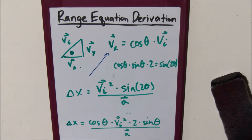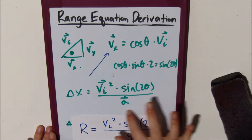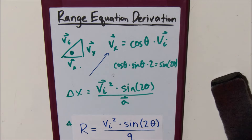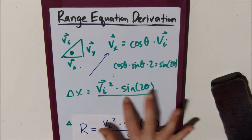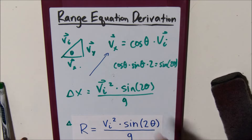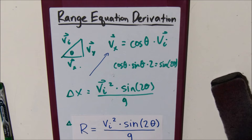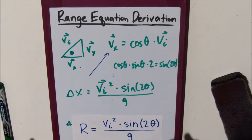If you compare it to our known range equation, you'll notice that everything is the same except the variable for gravity or acceleration. In the projectile motion problems we're going to be doing, you can say that the acceleration is gravity, because gravity is always going to be acting on these projectiles downward toward the ground. And that's how you derive the range equation.